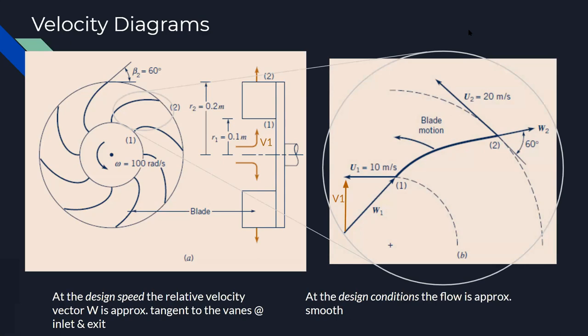u is the cross product of the angular velocity omega with the position vector r. We also have the absolute velocity, which is v, and that's going to come into terms later when we talk about the governing equations for this.